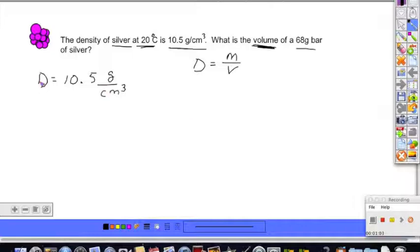So density, we do know, and the mass is another value that we do know. This bar has a mass of 68 grams, and we're asked to solve for the volume.